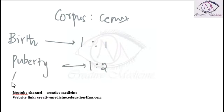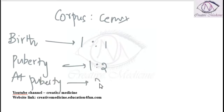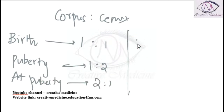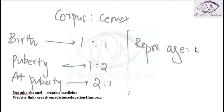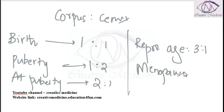At puberty, corpus to cervix ratio equals 2 is to 1. In the reproductive age group, corpus to cervix ratio equals 3 is to 1. At menopause, corpus to cervix ratio equals 1 is to 1.